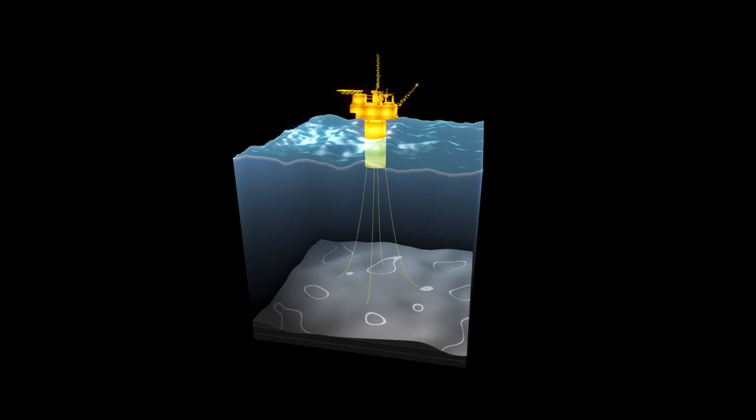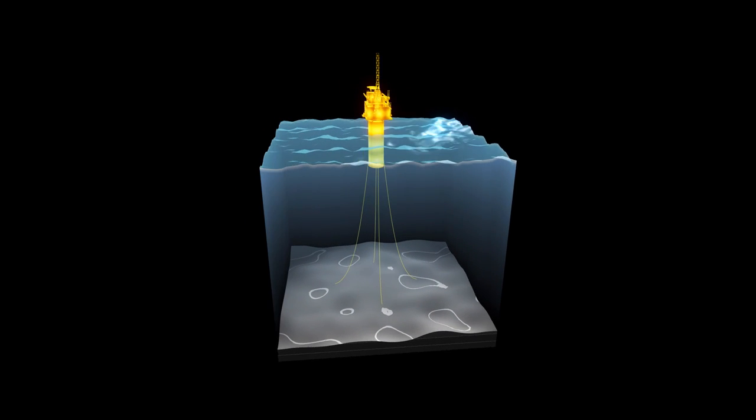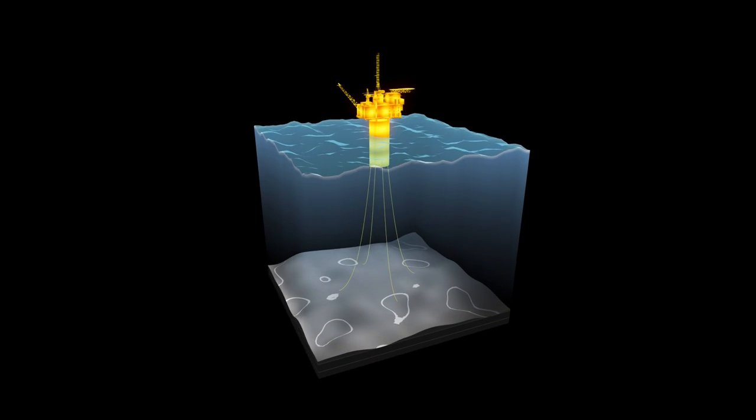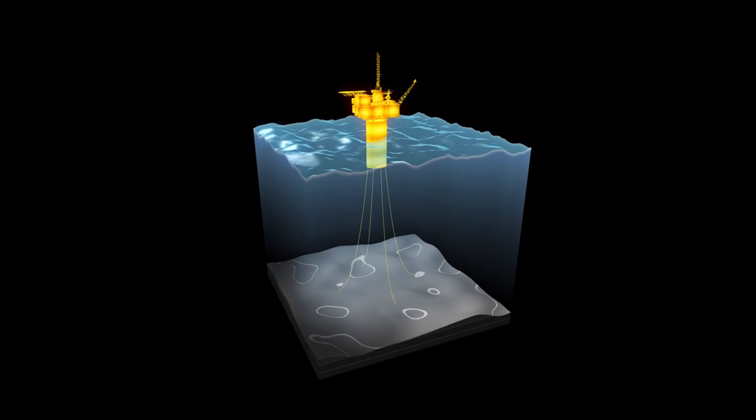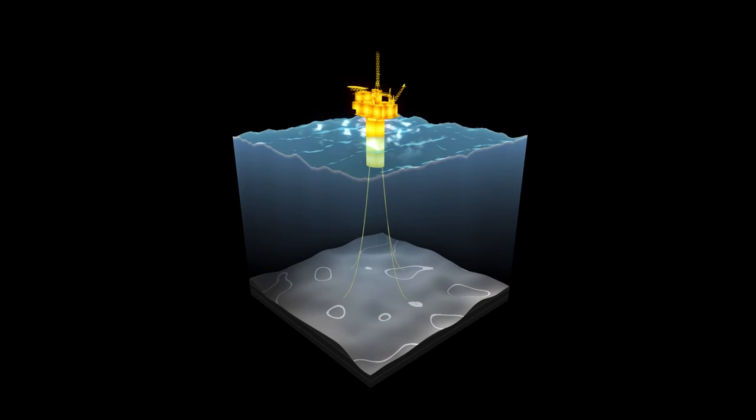The Perdido platform in the Gulf of Mexico rests on a floating spar structure moored in 8,000 feet or 2,450 metres of water and is currently the world's deepest drilling and production platform.